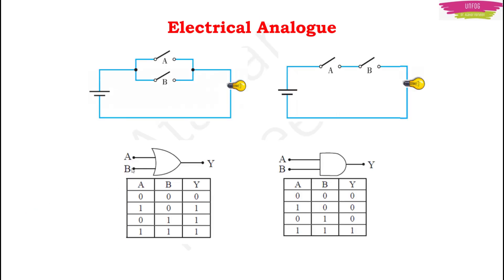We can use 0 and 1 as switches — on and off. In an OR gate, the two switches are connected in parallel. If both switches are OFF, output is 0 and the bulb will not glow. If any one switch is ON, the bulb may glow. If both switches are ON, the bulb will surely glow. In an AND gate, both switches are connected in series, so if any one switch is OFF the bulb will not glow. The bulb glows only when both switches are ON.